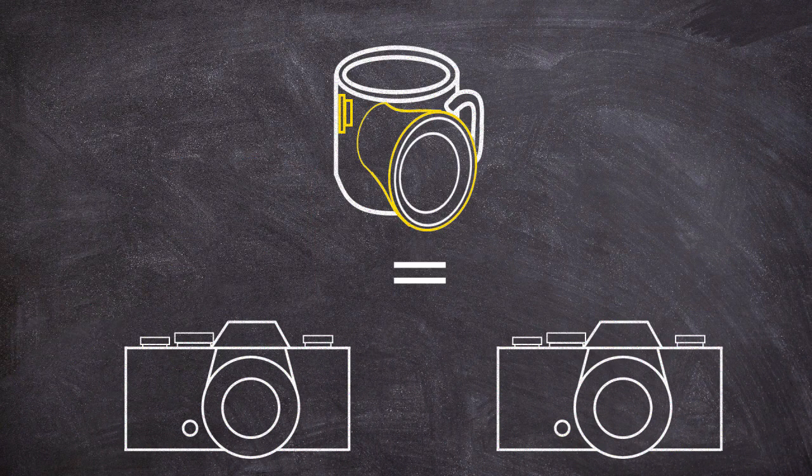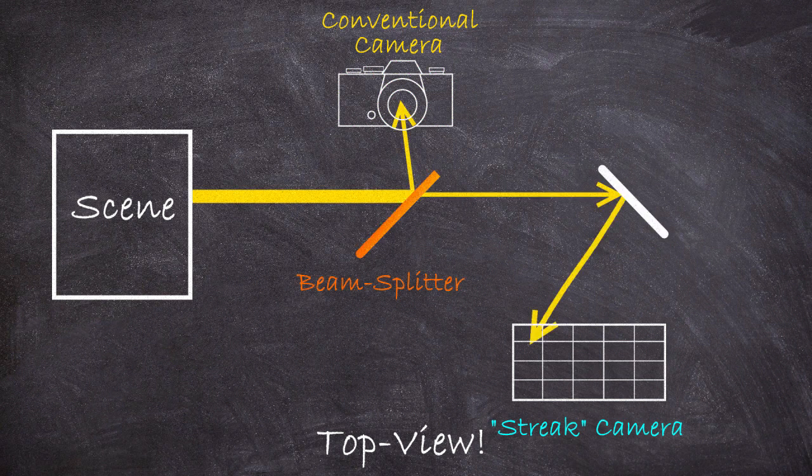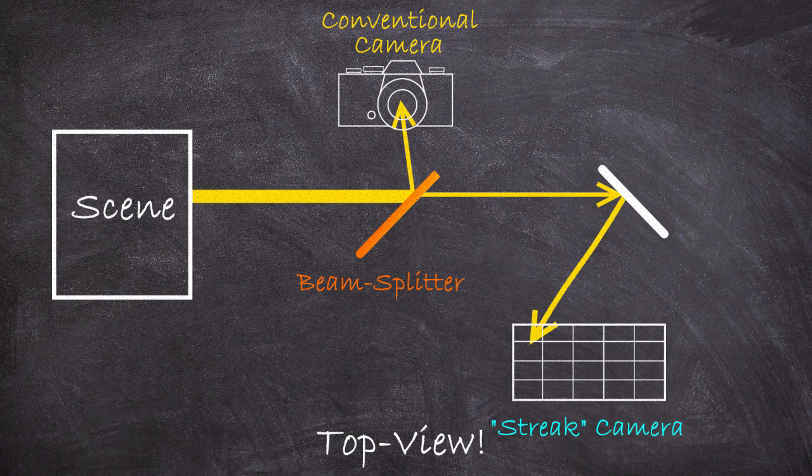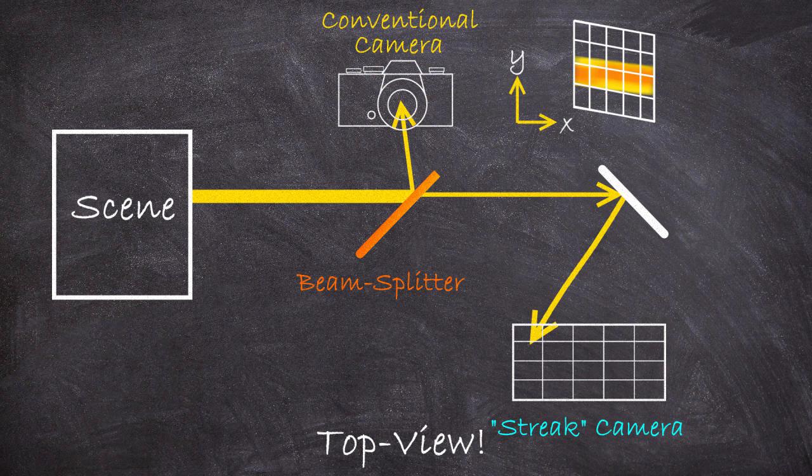Well they used two cameras. The light from the scene was passed through a beam splitter so that basically two cameras were taking a single combined exposure of the same scene. Now the first camera was just taking a conventional image just like we talked about. It took an image that was fully temporally integrated and then spatially integrated about the neighborhood of each pixel.